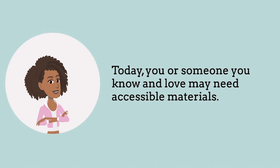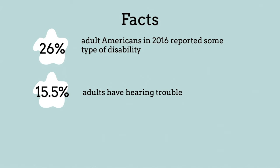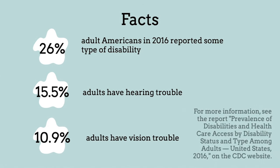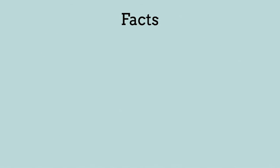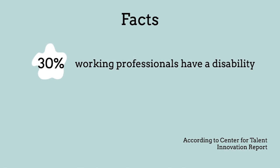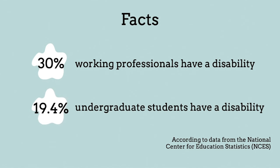Today, you or someone you know and love may need accessible materials. 26% of adult Americans in 2016 reported some type of disability. 15.5% of adults have hearing trouble, and 10.9% of adults have vision trouble. 30% of working professionals have a disability, and 19.4% of undergraduate students disclosed a disability.